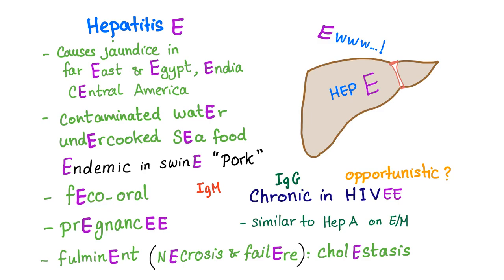Fecal-oral route of transmission. Sometimes it's common in pregnancy, and when it comes to pregnant women, it's fulminant. Fulminant means massive necrosis, which can lead to failure — EW. And there is marked cholestasis in Hepatitis E. Mostly it's acute in these countries; sometimes it's the most common cause of acute viral hepatitis.